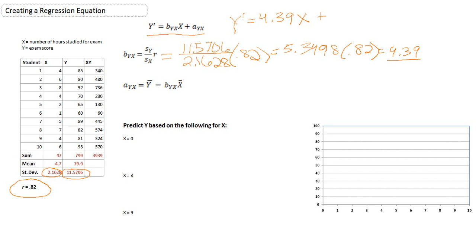The second part is our y-intercept. Where does our line cross the y-axis at x equals 0? In order to calculate this, we first need the mean for y. If we go back to our table here, we can see the mean for y is 79.9.